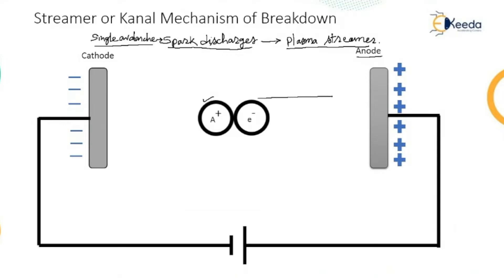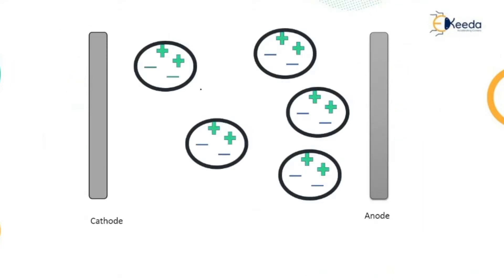By the time the electrons reach the anode, the positive ions are virtually in their original positions. So the electrons travel towards the anode, and when they reach the anode, the positive space charges get developed at the anode. When the avalanche in the gap reaches a certain critical size, the combined space charges — as you can see in this figure — and the externally applied field lead to intense ionization.